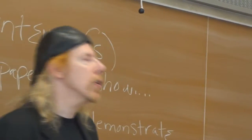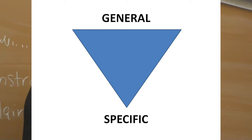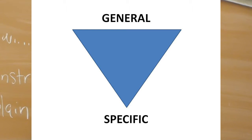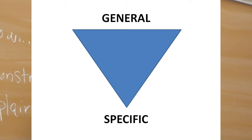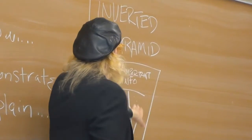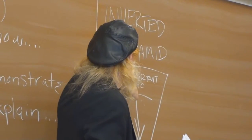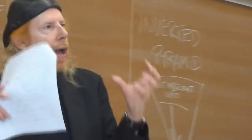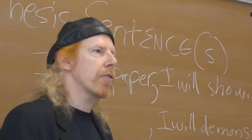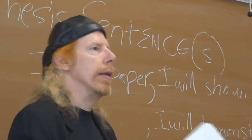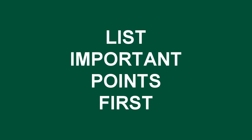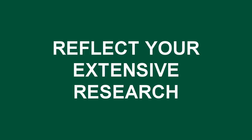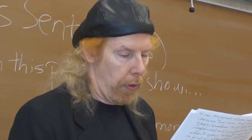It helps in the development section to use what's called the inverted pyramid approach. This means you put the most important information right at the top, and then the rest of the paragraph gives more information in descending order from most important to least important. You want to start with that element that really captures your point, then list the things that will explain these points from beginning to end. In the development section, you want to reflect your extensive research, and the more in-depth this section is, the better.